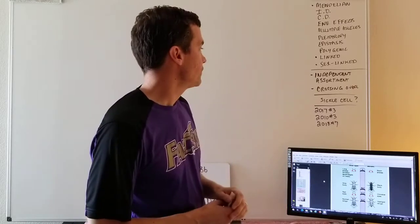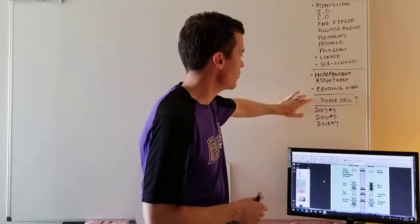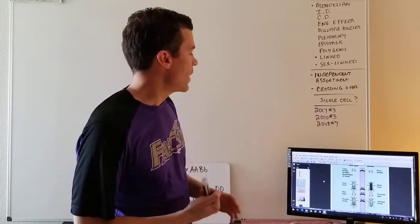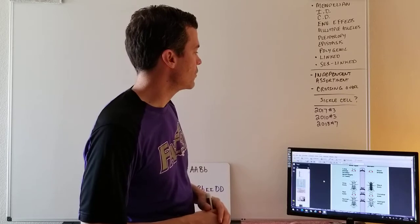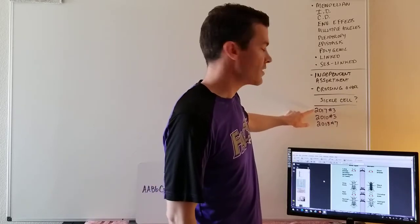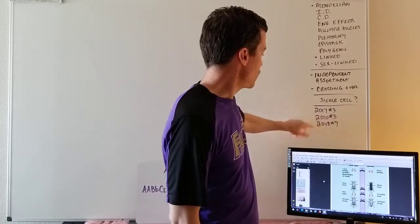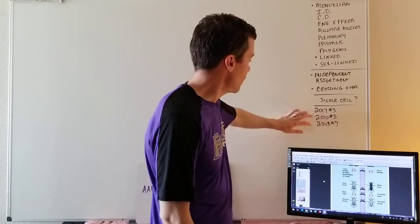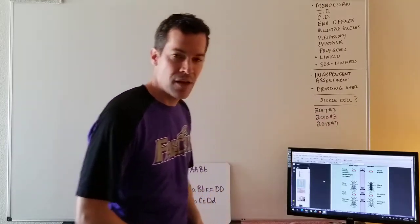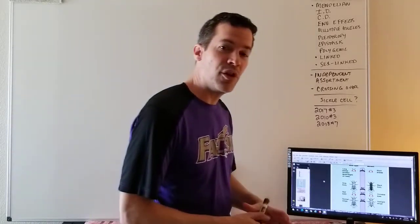We're going to look at Mendelian genetics and about nine other ways of breaking Mendelian rules, including independent assortment, crossing over, and possibly sickle cell. By the end of this video you should be good to go on free response 2017 number three, 2010 number three, and 2018 number seven. Those last two are especially good.